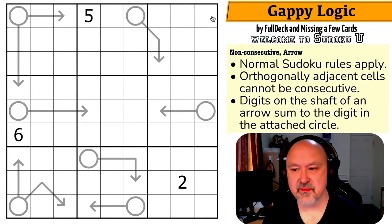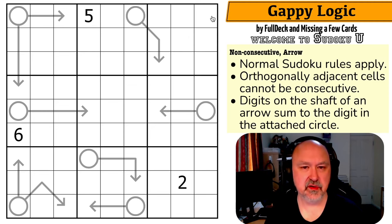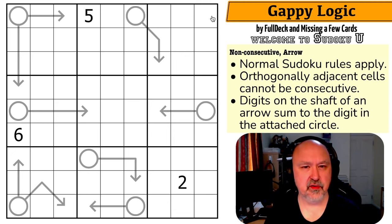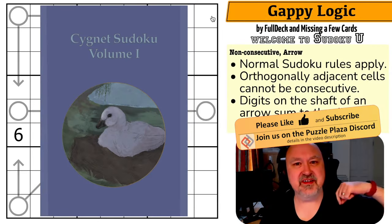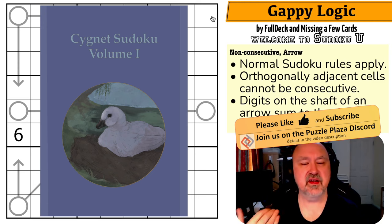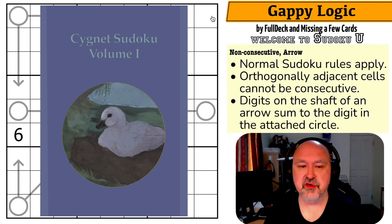Good afternoon everyone, this is Bremster. Today I'm coming to you with the lecturer's notes from this particular set of the Sudoku U series. This is 'Gappy Logic' by Full Deck and Missing a Few Cards. I haven't checked to see if this puzzle is actually in Signet Sudoku Volume One. Signet Sudoku Volume One is a book of puzzles created by and for the class.